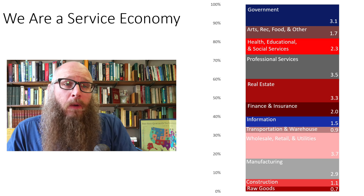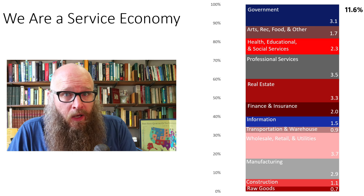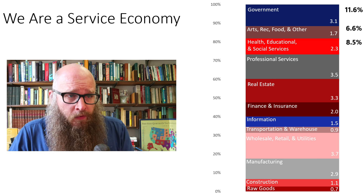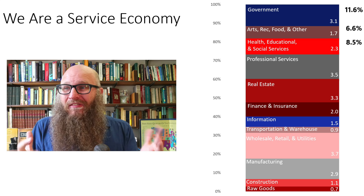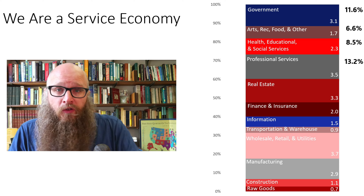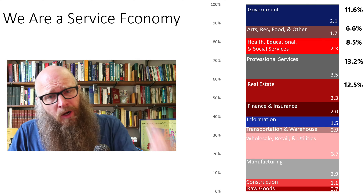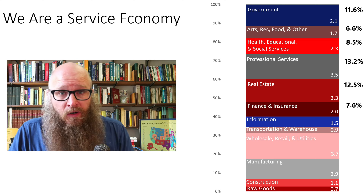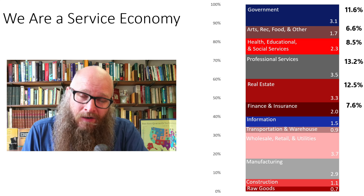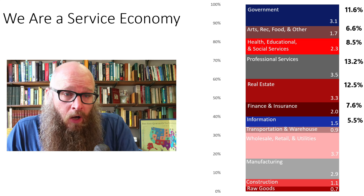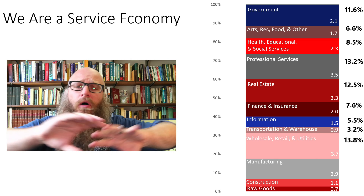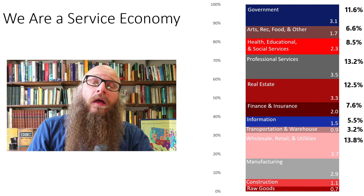Here are all the sectors. Government produced $3.1 trillion of economic output — approximately 11% of the economy. Arts, recreation, restaurants, and other services are 6%, or $1.7 trillion. Healthcare, educational services, and social services amount to 8% of the economy. Business management and finance majors contribute $3.5 trillion, or 13%. Real estate — realtors, landlords, and commercial real estate — is 12% of economic output. Finance and insurance is 7%. The IT sector is $1.5 trillion, or 5.5%. Transportation and warehousing is 3%. All retail — Walmarts, grocery stores, wholesalers, and utilities — comprise nearly 14% of the economy.